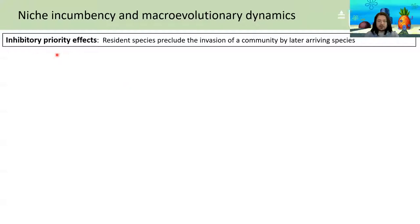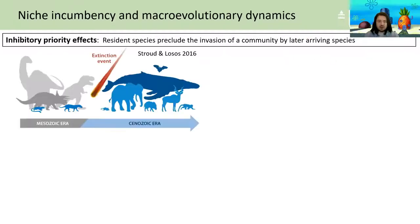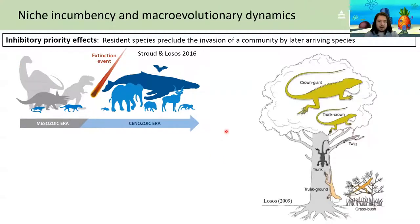With priority effects I mean that resident species preclude the invasion of a community by any later arriving species. This process has been linked to the macroevolutionary process of niche incumbency. The classic example of niche incumbency is where the rise in diversity of mammals was at first limited by the already incumbent lineages of dinosaurs. Equally, niche incumbency has been linked to adaptive radiations in which the diversity of radiations is limited by how many niches are actually available.